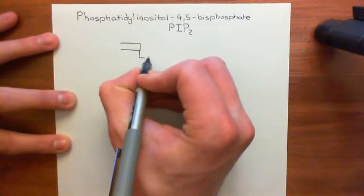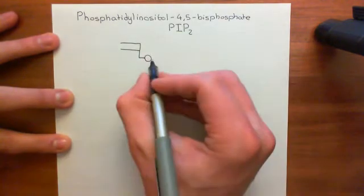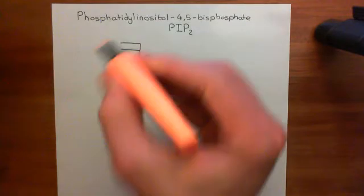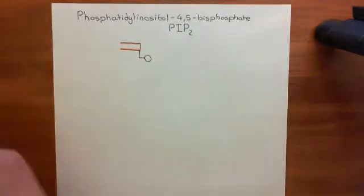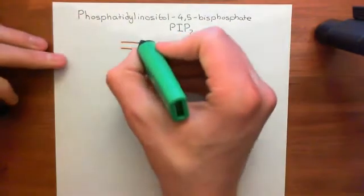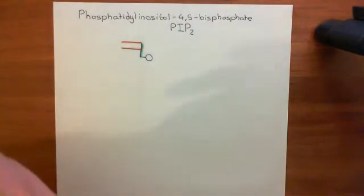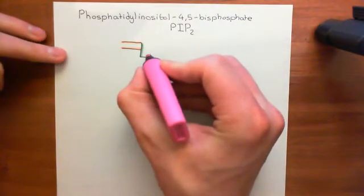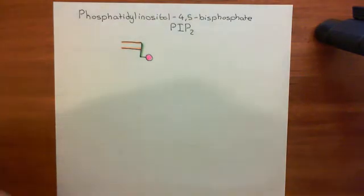Here is our phosphatidic acid molecule. We're now going to add on inositol. The two long-chain carboxylic acid molecules are shown there, the glycerol molecule is highlighted in green, and the phosphate group comes off the third carbon's alcohol group.